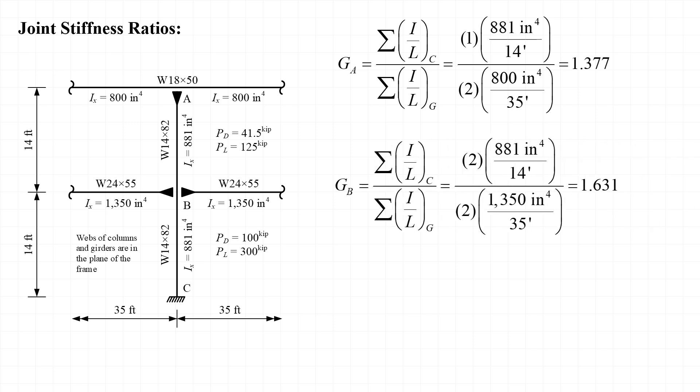Next, considering joint B, there are two W14 by 82 columns framing in. Each of them has a moment of inertia of 881 inches to the fourth and each has a length of 14 feet. There are also two beams, both W24 by 55 with moments of inertia of 1350 inches to the fourth and each with a length of 35 feet. Thus, the stiffness ratio for joint B is 1.631.